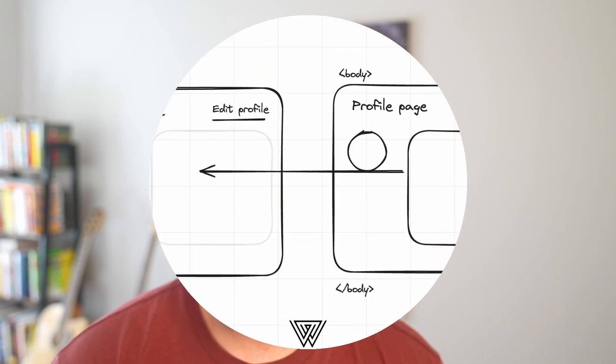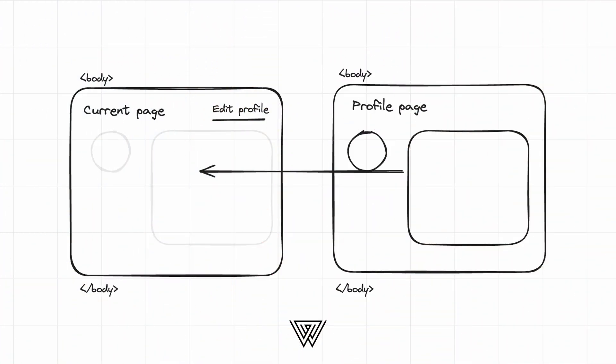Turbo itself is a predecessor of the turbo links library, but they've added on the concept of frames and streams. Frames are pretty simple by example but you can go quite far with advanced use cases involving nested frames or updating specific parts of the page. It works by essentially hijacking the request and serving HTML over the wire that returns back targeting that unique identifier and then updating that part of the page.